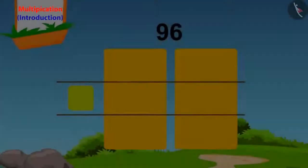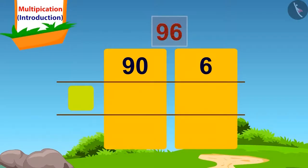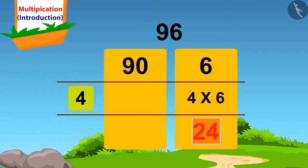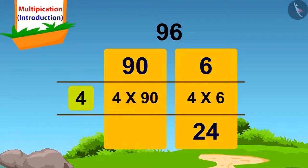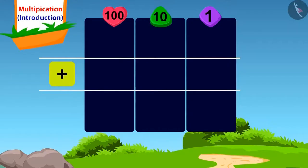Let's do it together. How do we split 96? 90 and 6. What shall we do now? We will first multiply 6 of 96 by 4. 4 times 6 is 24. We will write this answer here. Now we will multiply 90 by 4. 4 times 90 — how do we find it? Just by placing a 0 next to the answer of 4 times 9, which is 36, we will get the answer 360. We will write this answer here.